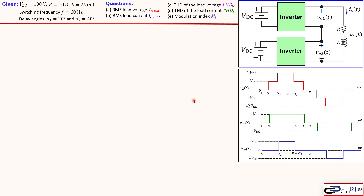The load voltage waveform operates between +2V_DC and -2V_DC. Because of alpha1 and alpha2, we see staircase waveforms, which bring it closer to a pure sine wave. These are the individual waveforms for VO1 and VO2. When placed on top of each other they create the combined red curve.